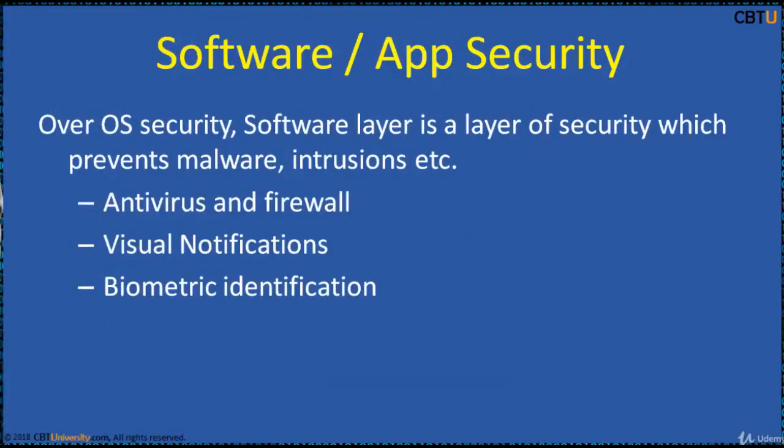Over the operating system security, the software layer is a layer of security which prevents malware and intrusions. These security layers include antivirus and firewall, visual notifications, and biometric identification.